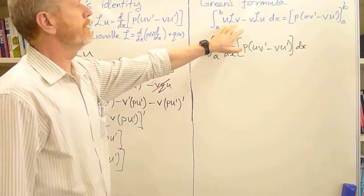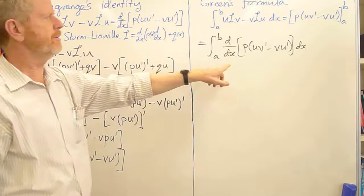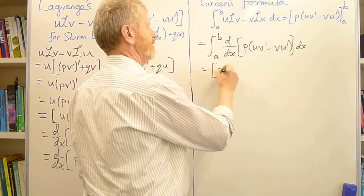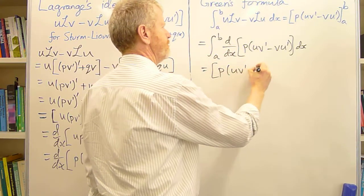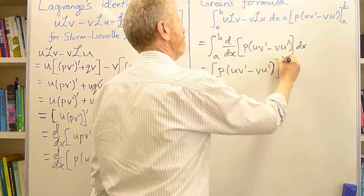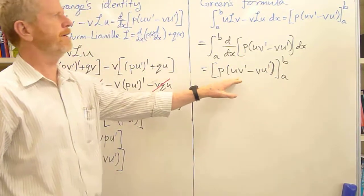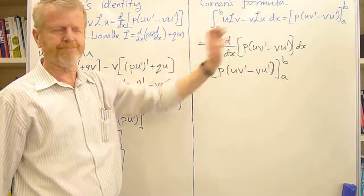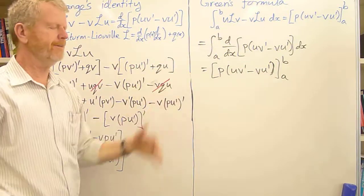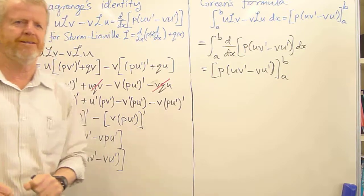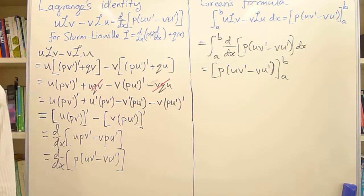And so this integral form turns into the integral of a derivative. And we know what that is. It's simply p[uv' - vu'] evaluated between the two endpoints, a and b. And that is Green's formula. And we use that to prove beautiful properties about Sturm-Liouville differential problems.